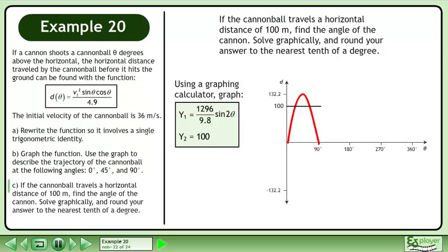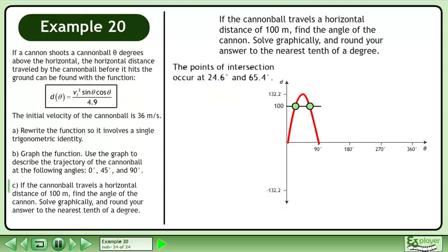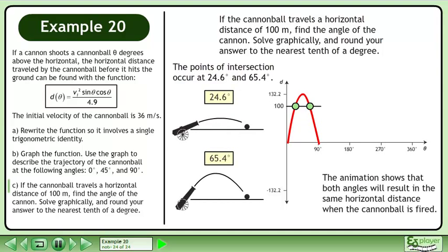Using a graphing calculator, graph the functions shown. The points of intersection occur at 24.6 degrees and 65.4 degrees. The animation shows that both angles will result in the same horizontal distance when the cannonball is fired.